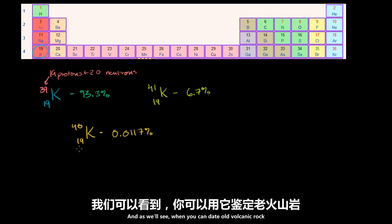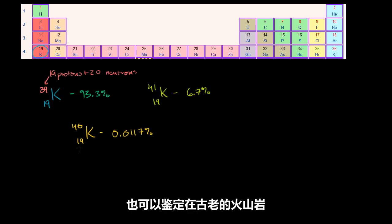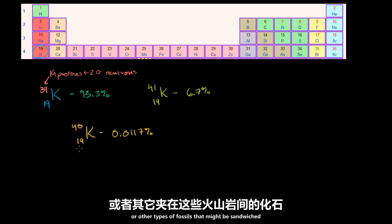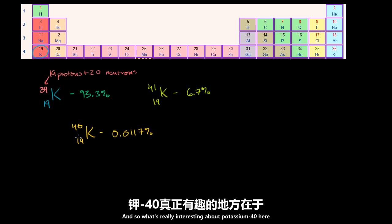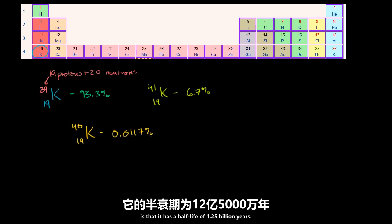And as we'll see, when you can date old volcanic rock, it allows you to date other types of rock or fossils that might be sandwiched in between old volcanic rock. What's really interesting about potassium-40 is that it has a half-life of 1.25 billion years.